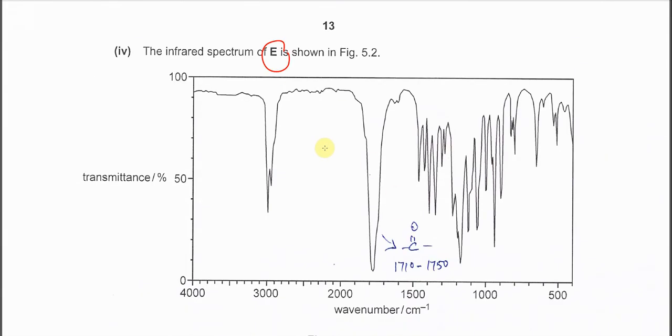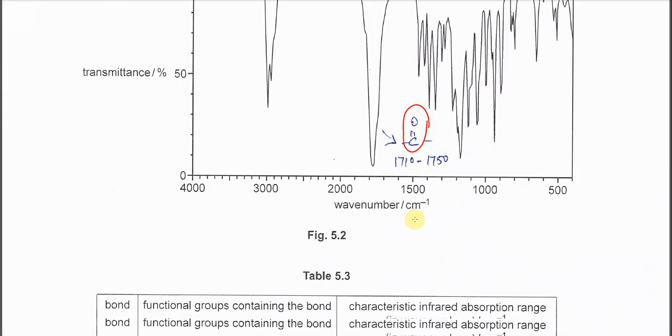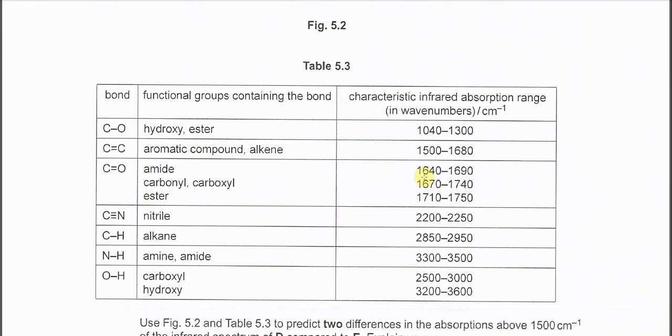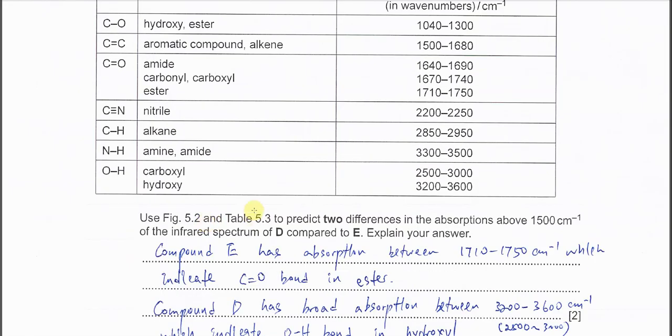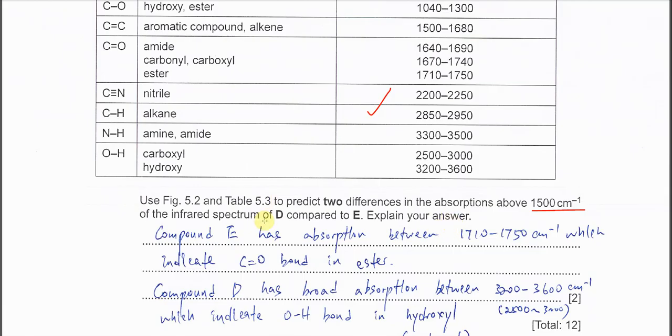Okay, IR is shown for E. Here we know that again what is E. E is a cyclic ester. D is the compound with OH and COOH. Now the E. E has a very strong absorption around 1700. So this one shows that it has carbonyl group. It's ester, right. So now table is given. Need to use some of the information to answer the question. Use figure 5.2, table 5.3, this table. Okay, to predict two differences in the absorption above 1500. So you just need to use those absorptions above 1500. Okay, so between D and E. So what is their difference? Of course compound E just has absorption between 1710 to 1750. So this one is for the C=O double bond in ester.